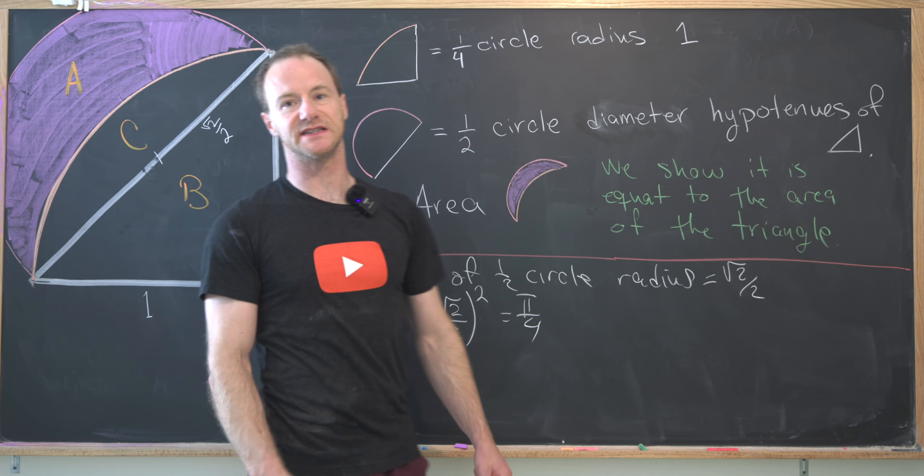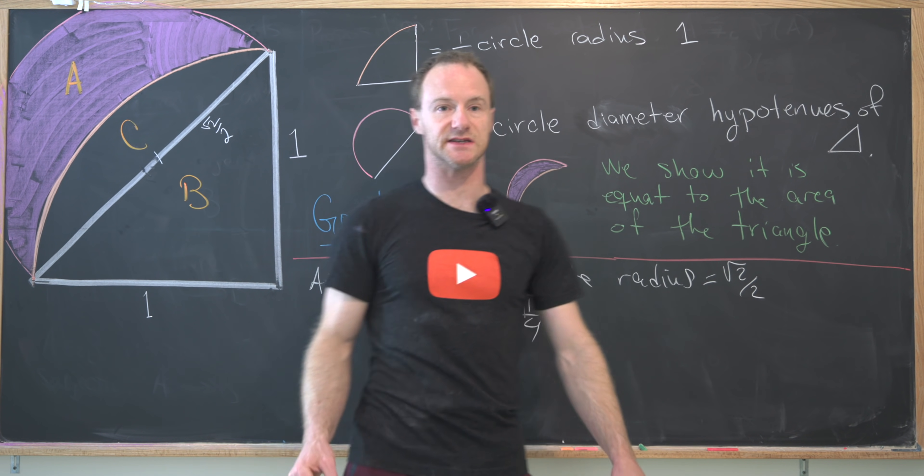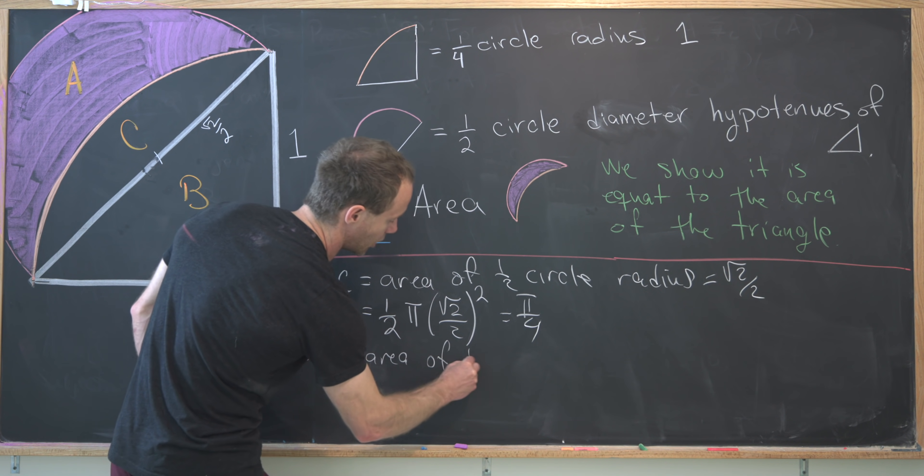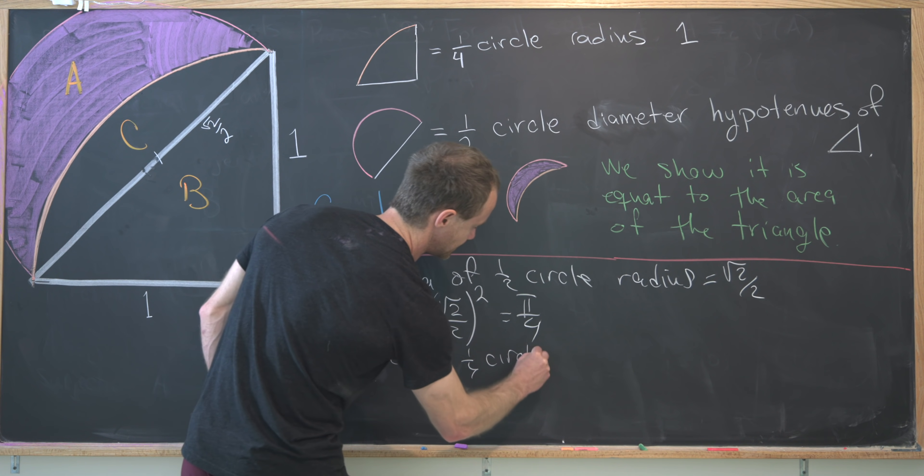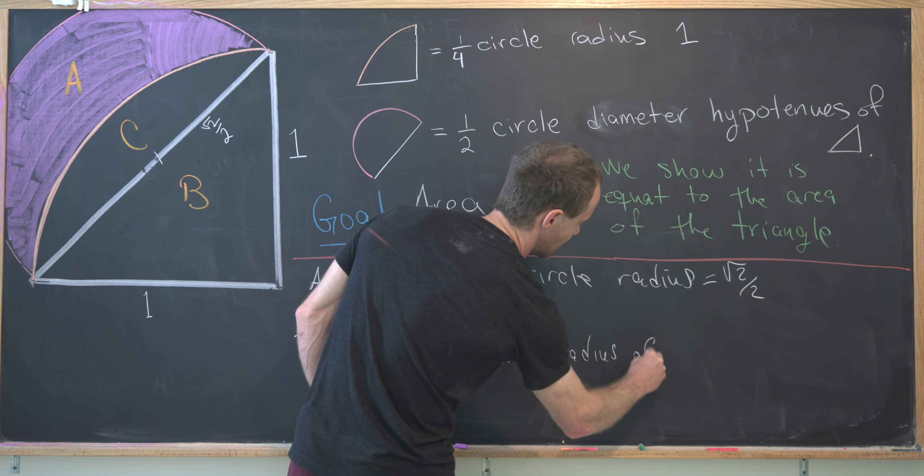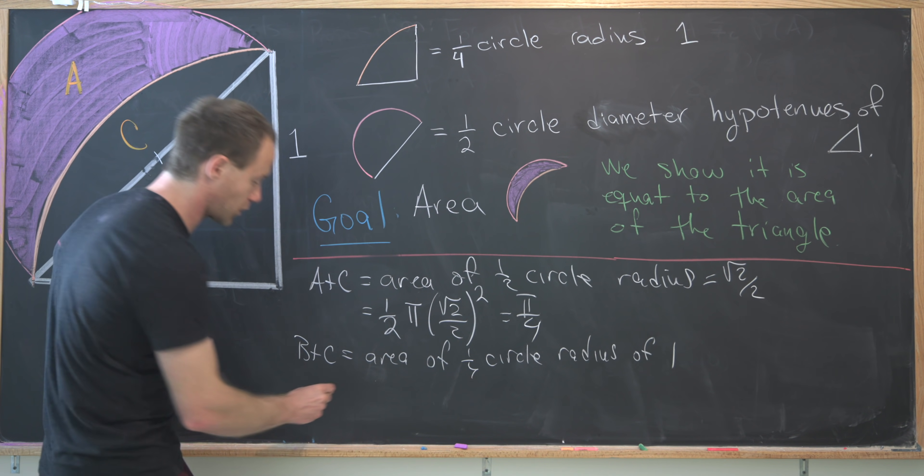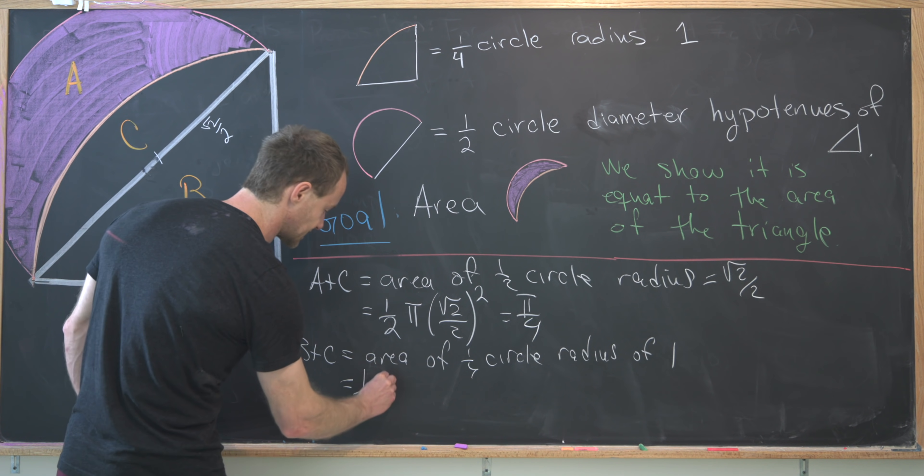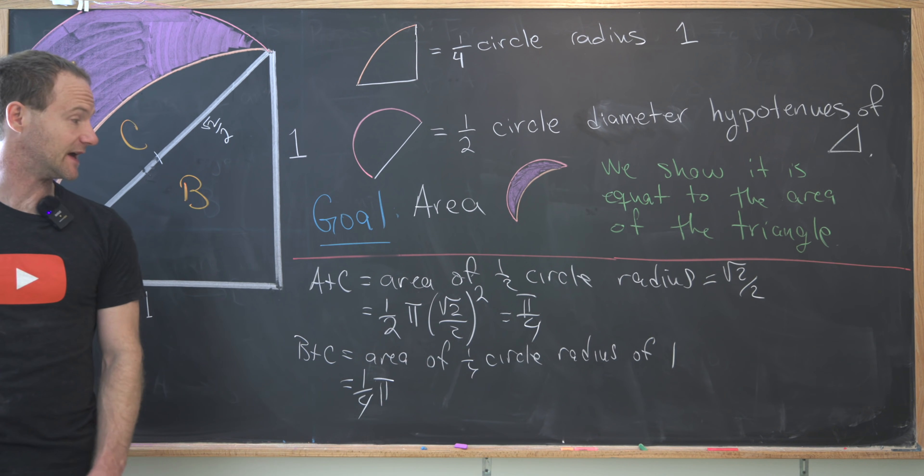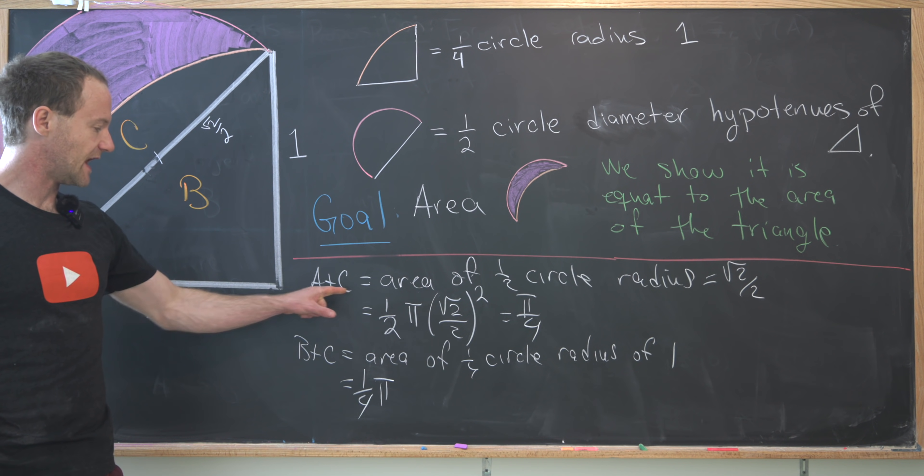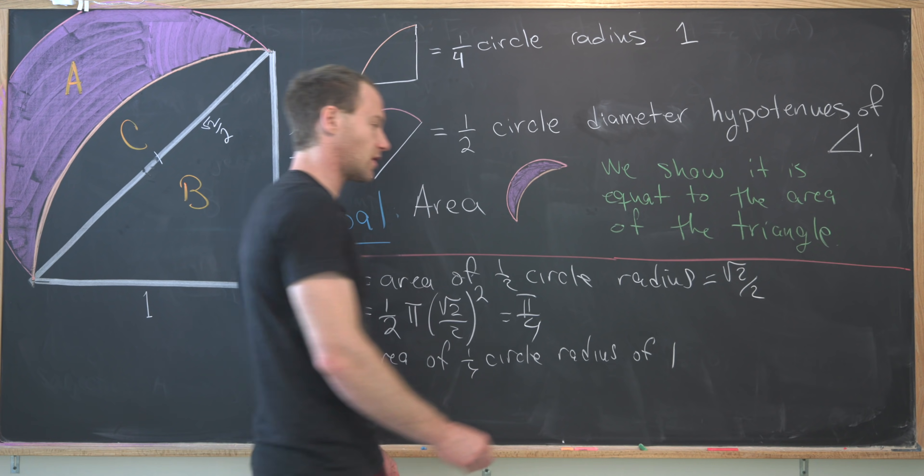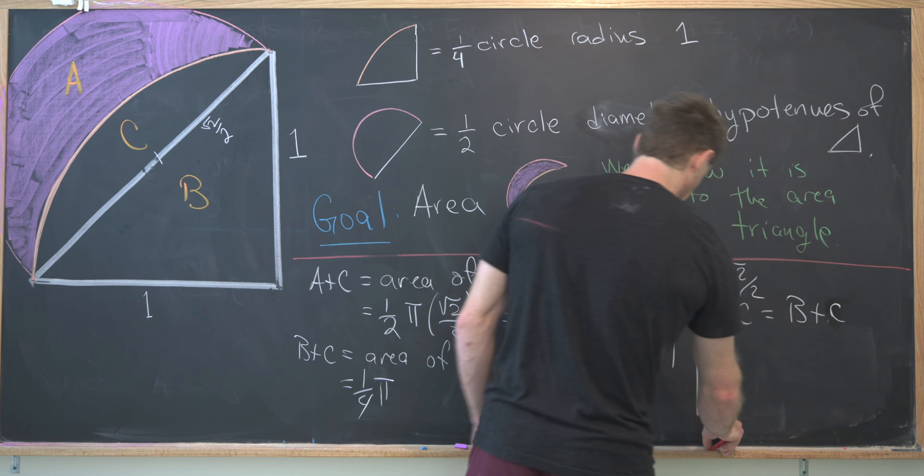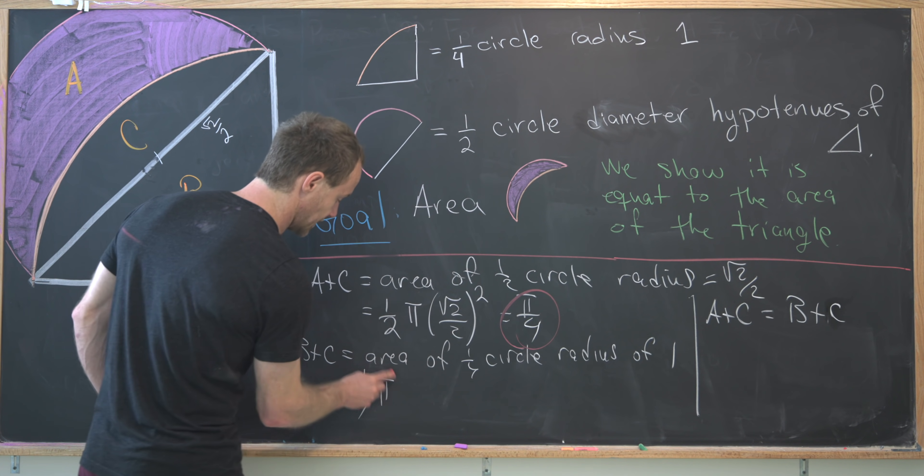But there's another combination that's easy to calculate. And that is B plus C. So let's notice that B plus C is the area of a quarter circle with a radius of one. And so since we've got a quarter circle, we need to multiply by a quarter. And then we've got pi times the radius squared. So that's going to be a quarter times pi. But look what we've got going on here. We've got A plus C and B plus C are both equal to one quarter. So A plus C equals B plus C. And that's because they both are equal to this quarter.